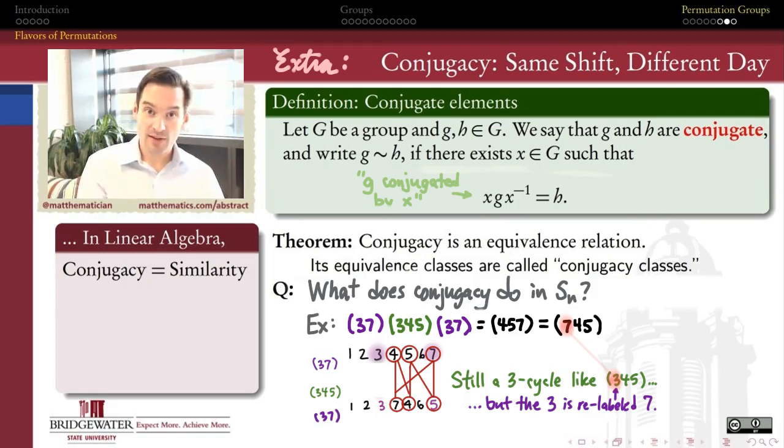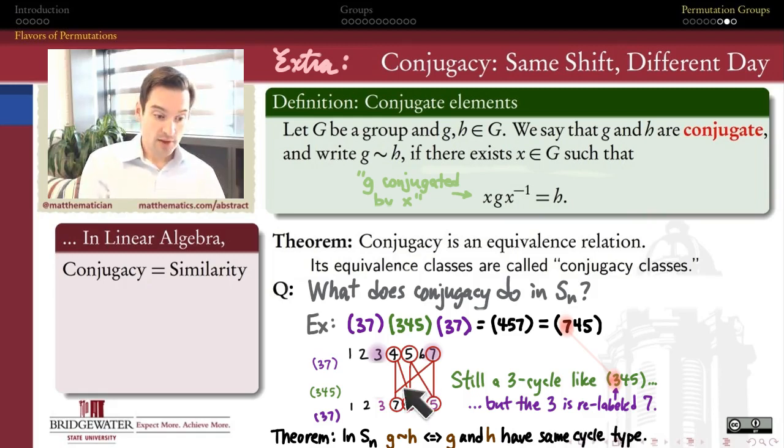So when conjugacy acts in the symmetric group, all that happens is that the labels that we use to accomplish this permutation here in the middle, the labels change. 3 put on a 7 mask and then this happened and then they took their masks off, right? And so it ends up still being a 3 cycle just with a 7 in place of a 3. What we can prove is that this is the case for any conjugacy inside of S_n. That in the symmetric group on n symbols, G is conjugate to H if and only if G and H have the same what we call cycle type. It's made up of a product of the same lengths of cycles.